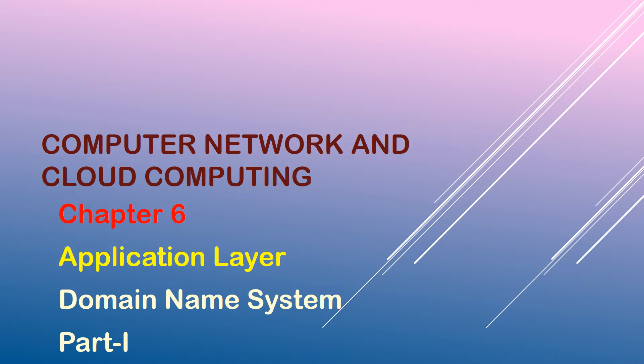We will discuss the application layer domain name system. There are several applications in the application layer of the internet model that follow the client-server structure. Client-server programs can be divided into two categories: those directly used by the user, such as email, and supporting programs like DNS which is used by other programs such as email or any other application where a domain name is needed.